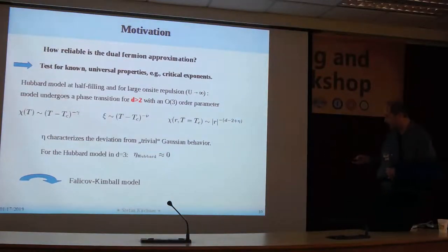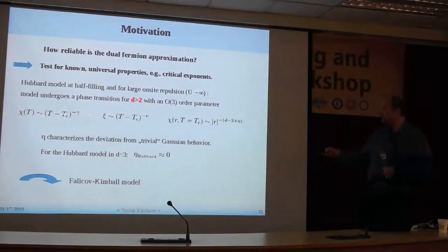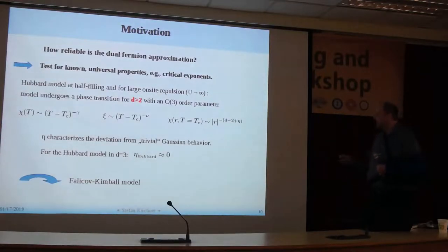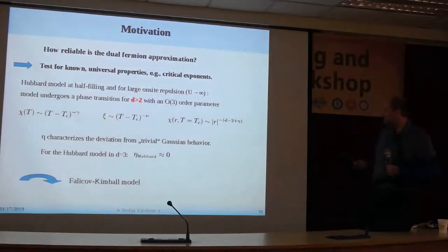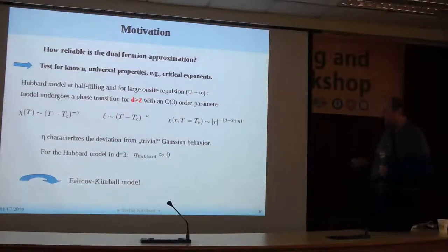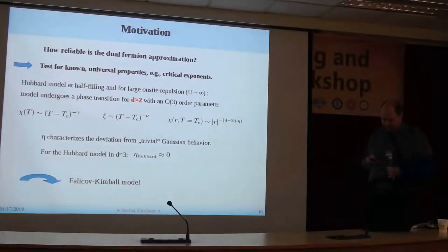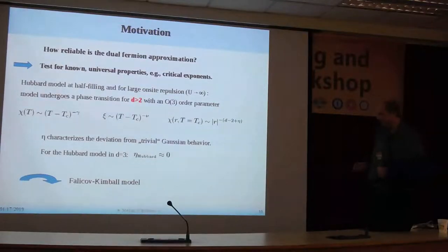There you can extract certain critical exponents — the traditional ones: the susceptibility exponent gamma, the correlation length exponent nu, and from the spatial dependence of the susceptibility, the exponent eta. For the Hubbard model in three dimensions, beta is essentially zero, so if you want to test something, this is a particularly bad model. A model which is much nicer is the Falikov-Kimbell model — that was the reason we chose that model first.